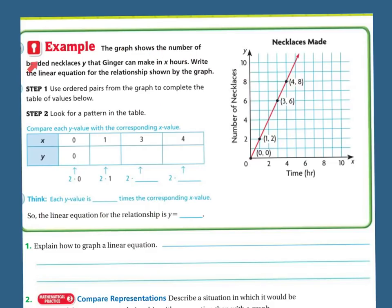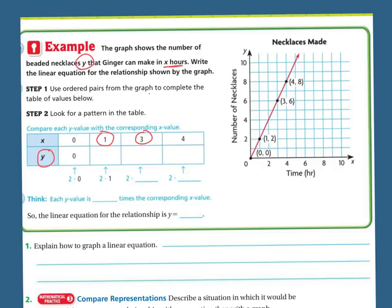This graph shows the number of beaded necklaces y that Ginger can make in x hours. Write the linear equation for the relationship shown by the graph. You're going to use ordered pairs from the graph to complete the table of values below, comparing the y value with the corresponding x value. So if we have x = 0, then we have y = 0. Let me go back and have you write the equation. The beaded necklaces is y, and it says she can make them in x hours — so this is saying if it's in 1 hour, 3 hours, or 4 hours.